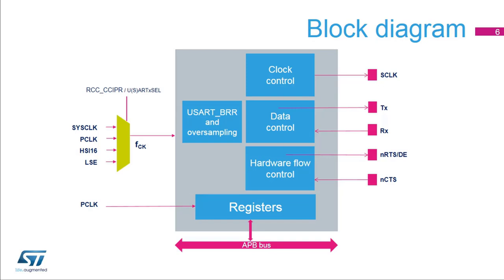TX and RX are used for data transmission and reception. NCTS and NRTS are used for RS-232 hardware flow control. The driver enable or DE, which is available on the same I/O as NRTS, is used in RS-485 mode. The clock output or SCLK is dual on purpose. When the USART is used in synchronous master mode, the clock provided to the slave device is output on the SCLK pin. When used in smart card mode, the clock provided to the card is also output on the SCLK pin.